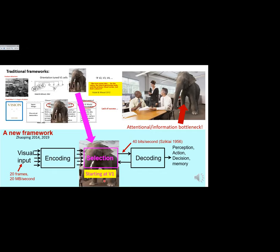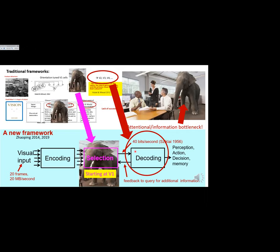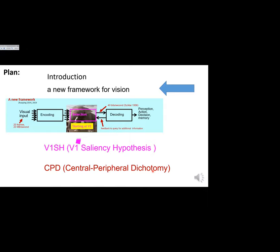If V1 is where attentional selection begins, then V2, V3, and V4 are downstream of that bottleneck — which would explain why progress stops at V1. Sometimes you need feedback to query for additional information: if you couldn't quite see what something was, you send a query back. That raises the question of what V2, V3, and V4 are really doing. This new framework motivates today's talk on the V1 Saliency Hypothesis.